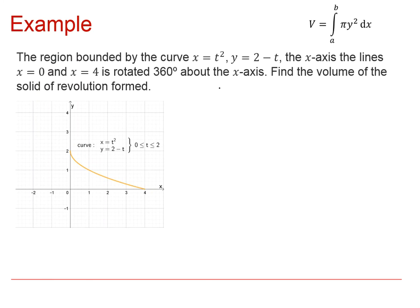So we're just going to do this by example. So we've got a region bounded by the curve X equals T squared, Y equals 2 minus T, the X-axis and the lines X equals 0 and X equals 4. And it's rotated 360 degrees about the X-axis. And we want to find the volume of the solid formed.